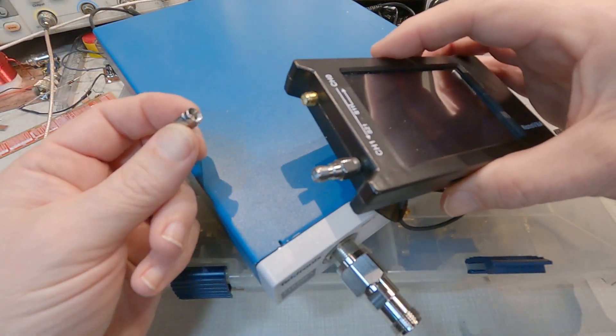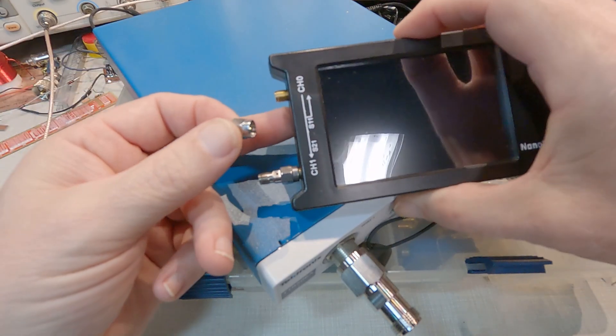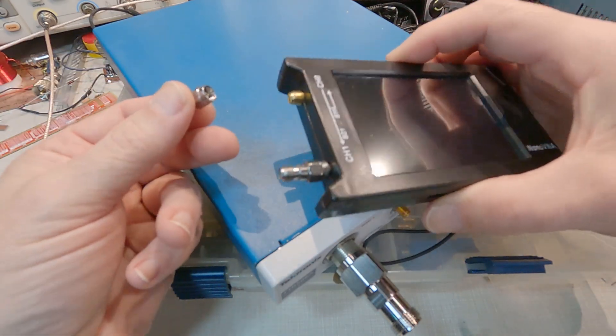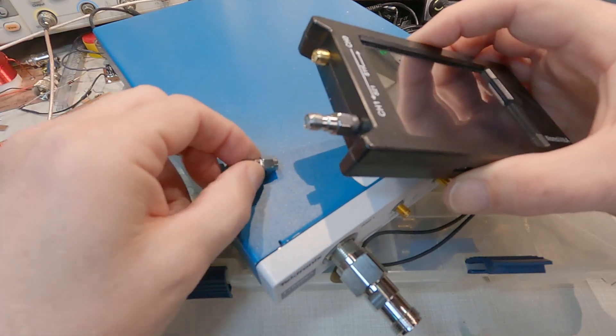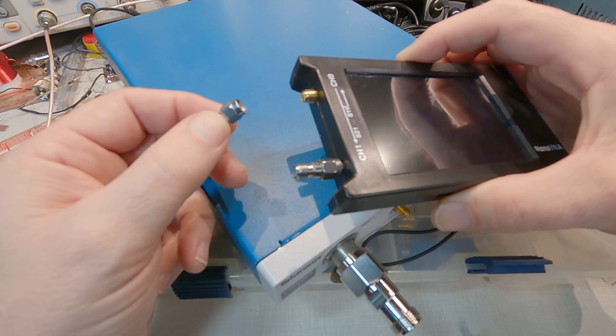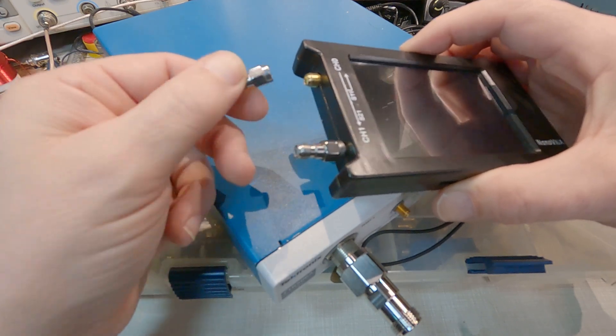Now I even use SMA style connector savers on this Nano VNA. Of course the Nano VNA is a very inexpensive instrument, but the connectors that are on it are probably not the highest quality and they're soldered onto the board, so it'll be a little bit of a pain to change them out.